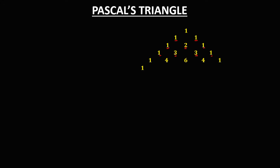Then we have 1, 1 plus 4 that's 5, 4 plus 6 that's 10, 6 plus 4 that's 10, and 4 plus 1 that's 5, then ends with 1. Then just continue the process for the binomial equation.